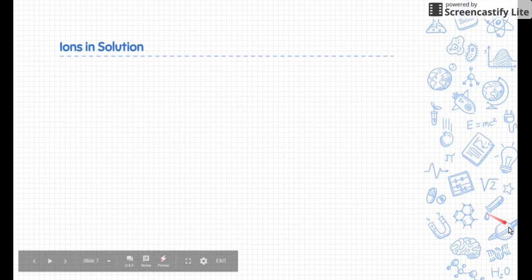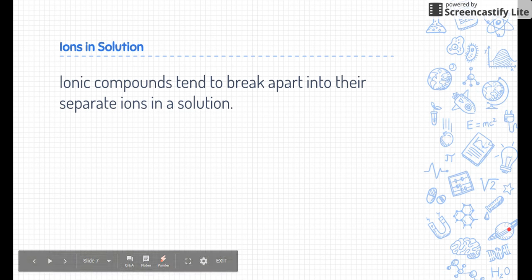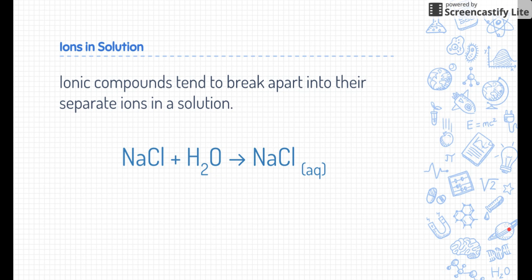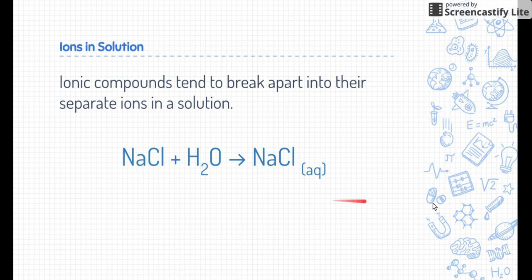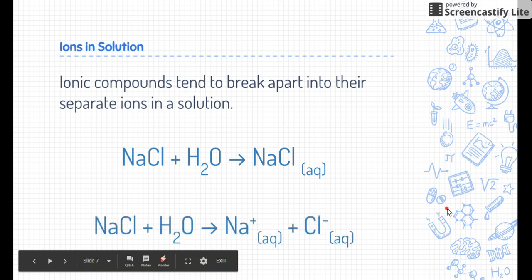I want to talk about what happens when ions dissolve in a solution. Ionic compounds tend to break apart into their separate ions in solution. Here's an example: here's sodium chloride, table salt like you would dump out of a salt shaker. We want to add it to water, so we're going to come up with something called sodium chloride aqueous product—that just means we dissolved salt in water.